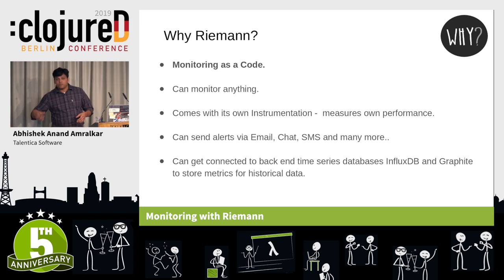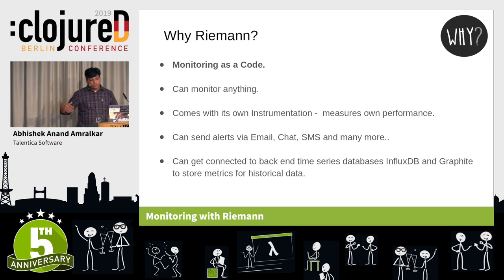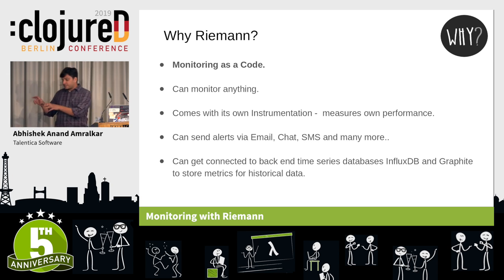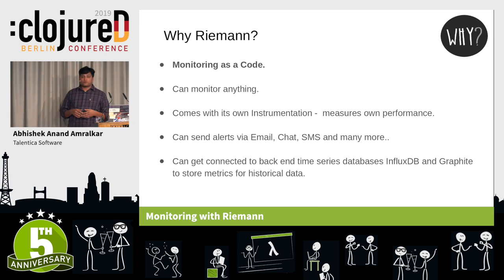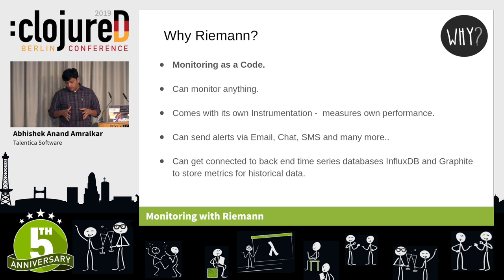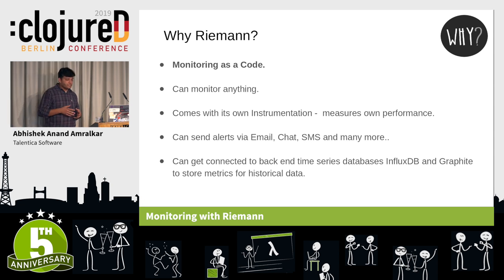Riemann comes with its own instrumentation — you can monitor Riemann from Riemann itself, measuring latencies while processing events. Riemann can connect to your alerting systems and send out alerts via email, SMS, Slack, and more. For historic data, Riemann can connect to back-end databases — mostly time series, such as InfluxDB or Graphite — and I think it connects to Elasticsearch too.